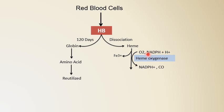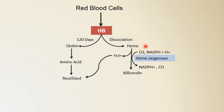This NADPH is derived from the HMP shunt pathway. After the action of heme oxygenase, the iron molecule present in the heme is released as Fe³⁺, which will be reutilized for heme synthesis. The remaining portion is converted into biliverdin. The molecular oxygen required for heme oxygenase is converted into carbon monoxide, and this is the only source of endogenous carbon monoxide synthesized in the body.